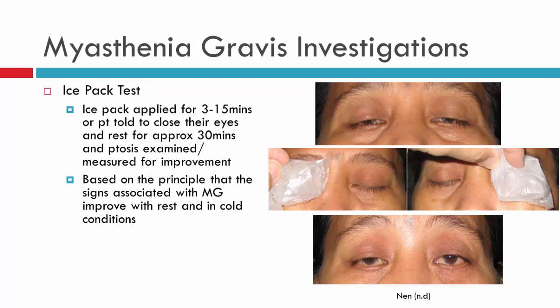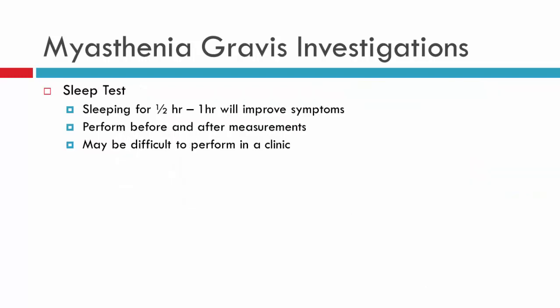An alternative to the ice pack test is to simply ask the patient to close their eyes for around 30 minutes in the waiting area without opening them, then bring them back in to see whether there's an improvement in ptosis after that rest. Similarly, with a sleep test, if your patient sleeps for about half an hour to an hour, you should see improvements in symptoms post-sleep. This is more difficult to administer clinically as you usually don't have a bed for the patient, so it's generally not performed in clinic — it's probably easier to perform an ice pack test instead.